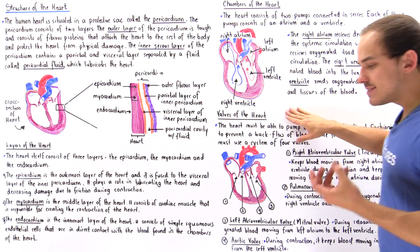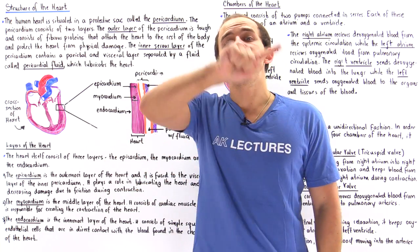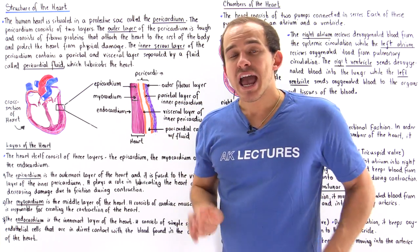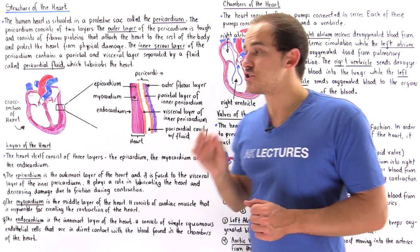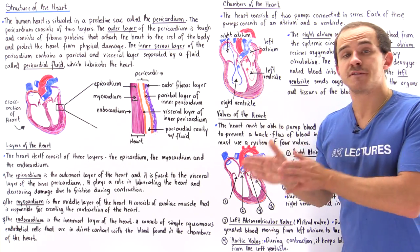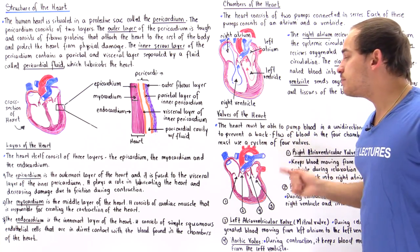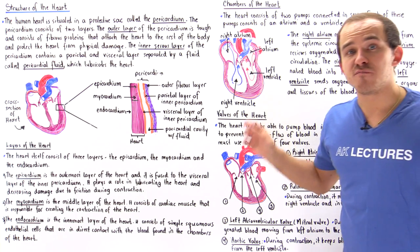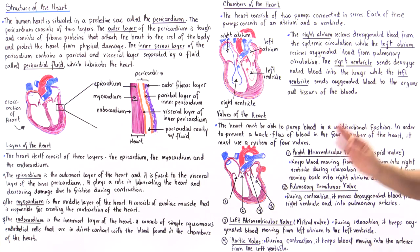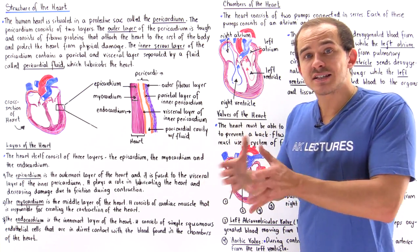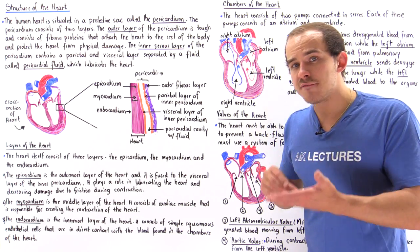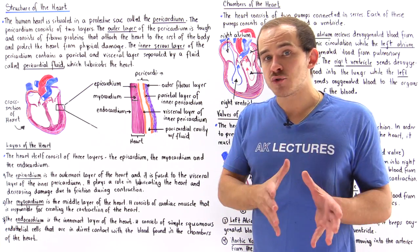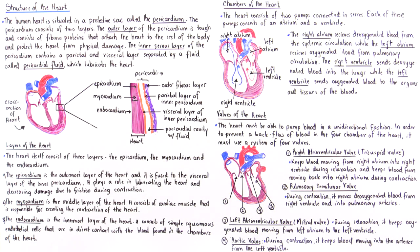Inside our cardiovascular system, blood flows in only one direction. It is very important that the heart creates a unidirectional motion of blood. To prevent backflow inside the heart, we have a system of four different valves — two sets: the atrioventricular valves, connecting the atrium to the ventricle, and the semilunar valves, connecting the ventricle to the blood vessels.